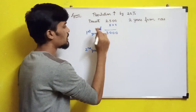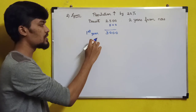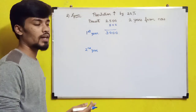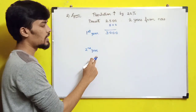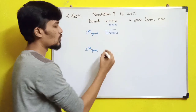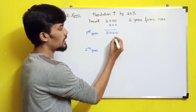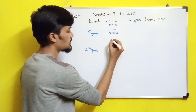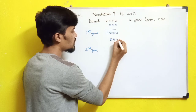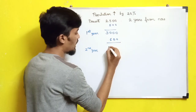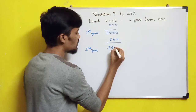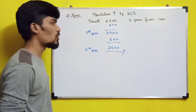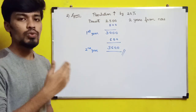So in the first year the population is 3000. Now for the second year, 20% of 3000 is 600. So you add 600 to 3000, giving 3600. So 3600 is your population after 2 years.